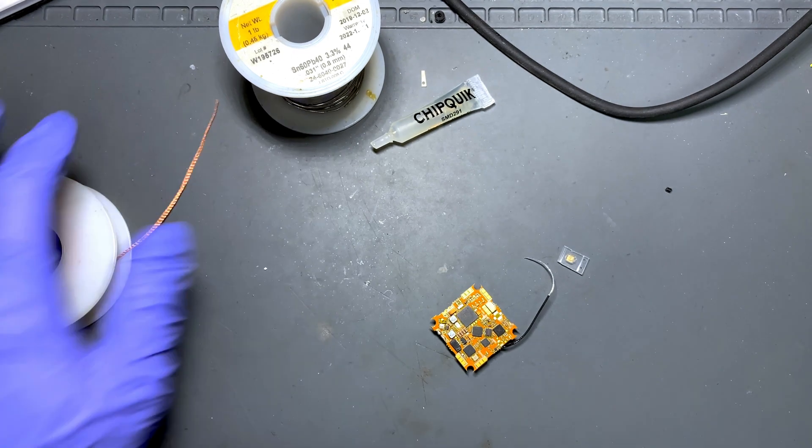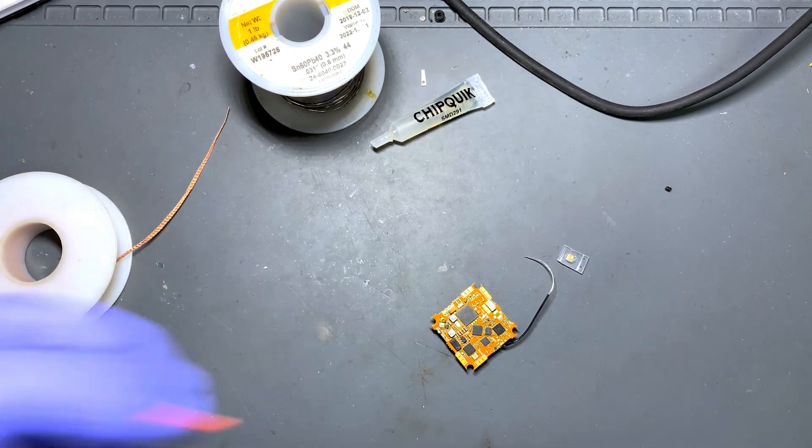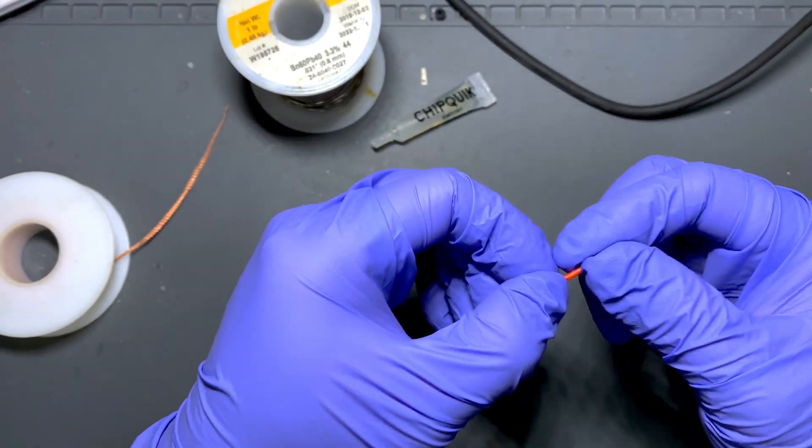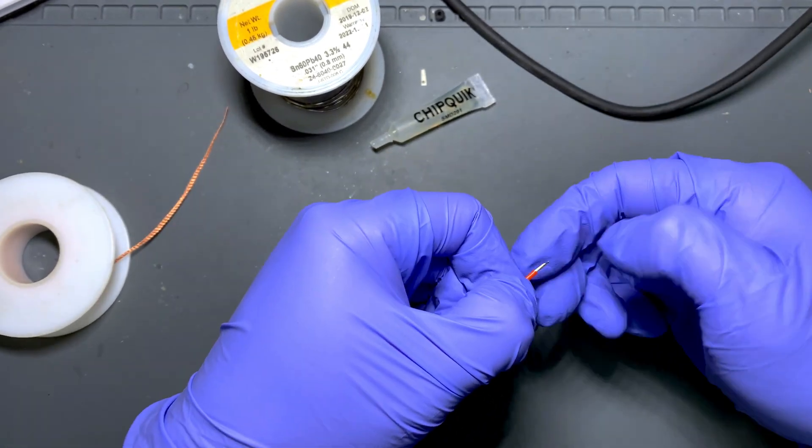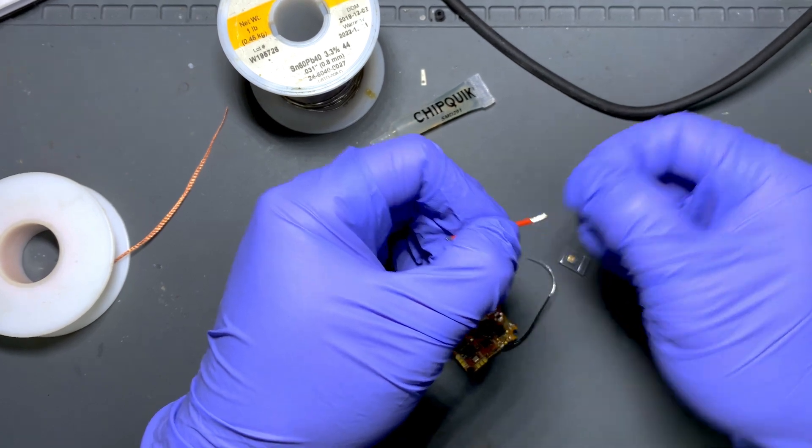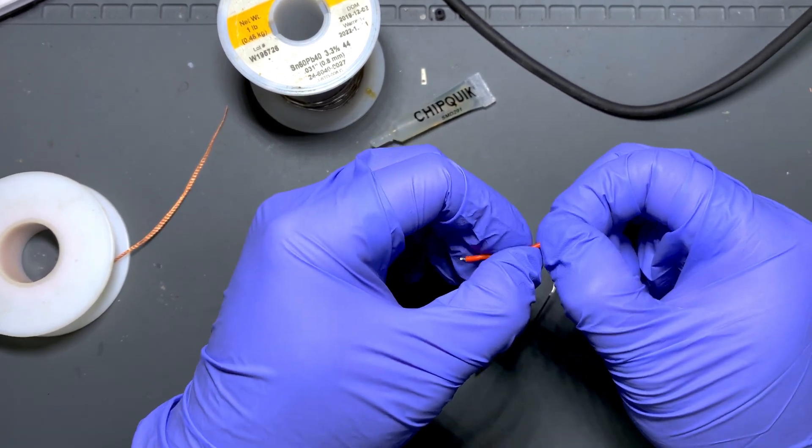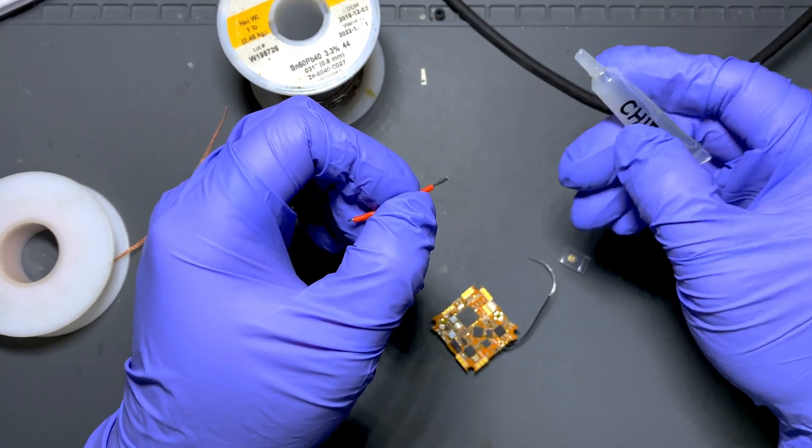If you don't have the solder wicks you can also use a normal wire, just strip it out and then use the metal wire part, add some flux.